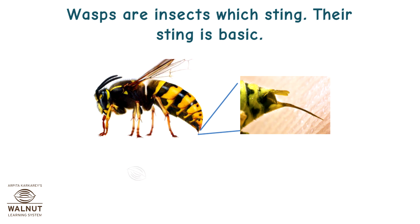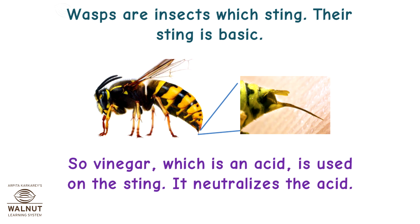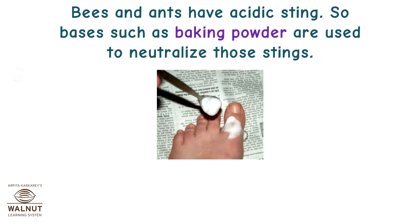Wasps are insects with a sting, and their sting is basic. So vinegar, which is an acid, is used on the sting to neutralize it. Bees and ants have acidic stings, so bases such as baking powder are used to neutralize those stings.